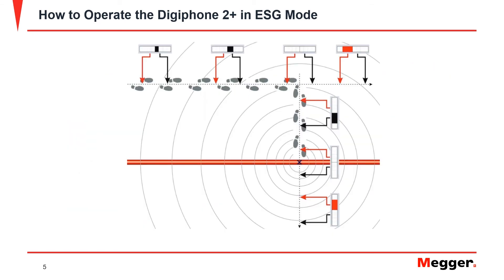To correct any possible lateral offset, insert the two earth spikes at an angle of 90 degrees to the cable route and determine the fault location by following the indicator unit.